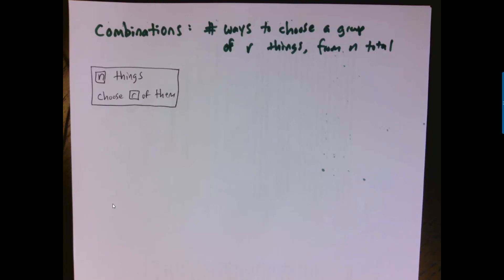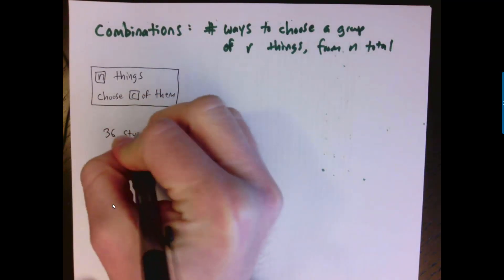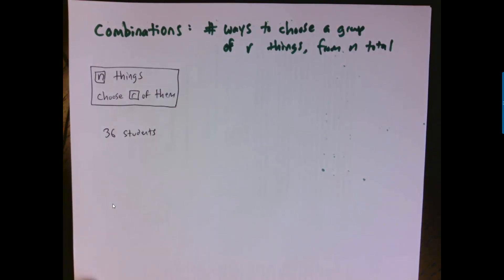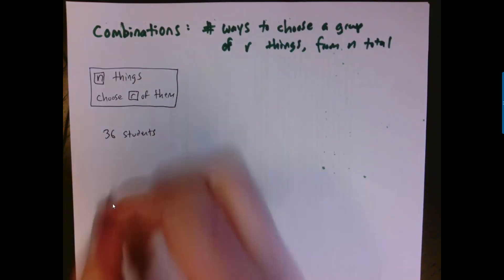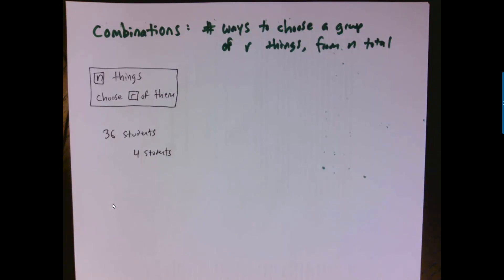The other big one is called combinations. The idea of combinations is it's the number of ways to choose a group of r things from n total things. I've got n things and I just want to choose a group of r of them, but it doesn't matter what order I choose them in. For example, let's say we have 36 students and I want an advisory committee. I want to get a group of students to tell me stuff, and I want there to be four students on my advisory committee. It doesn't matter who I choose first and who I choose second - all that matters to me is what's that group at the end look like. So the question is how many different groups of four students are possible if I had 36 to choose from originally.